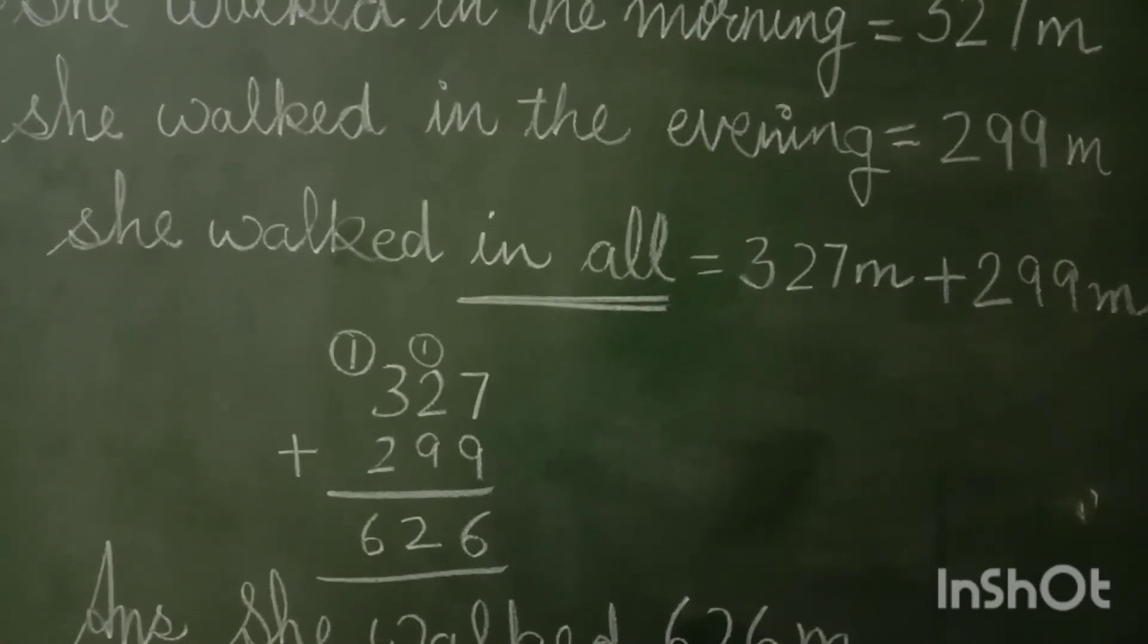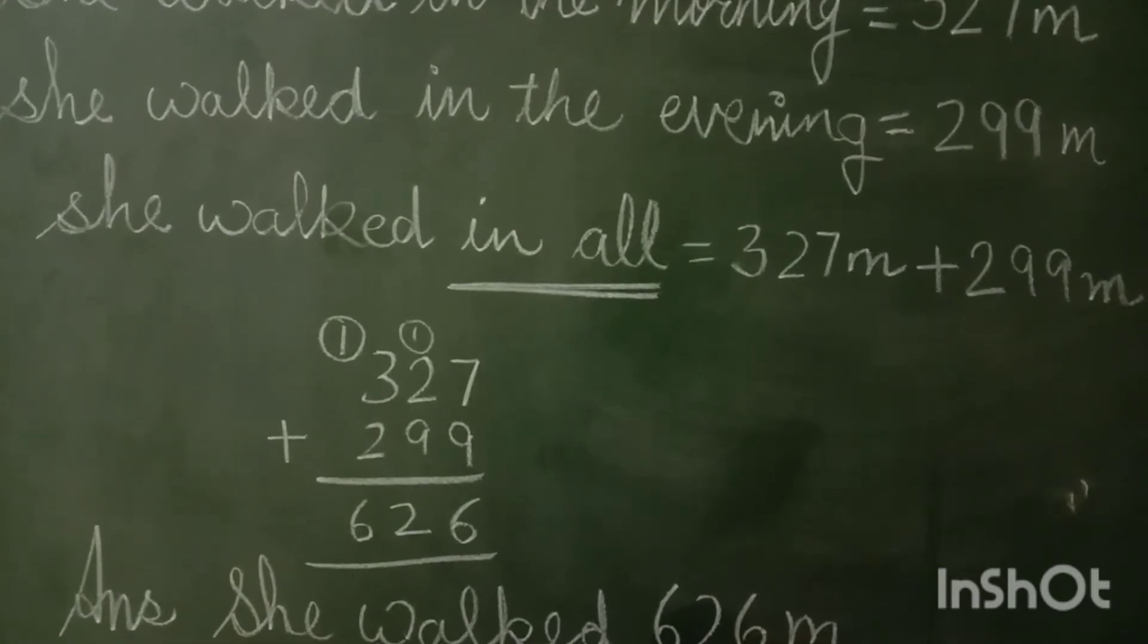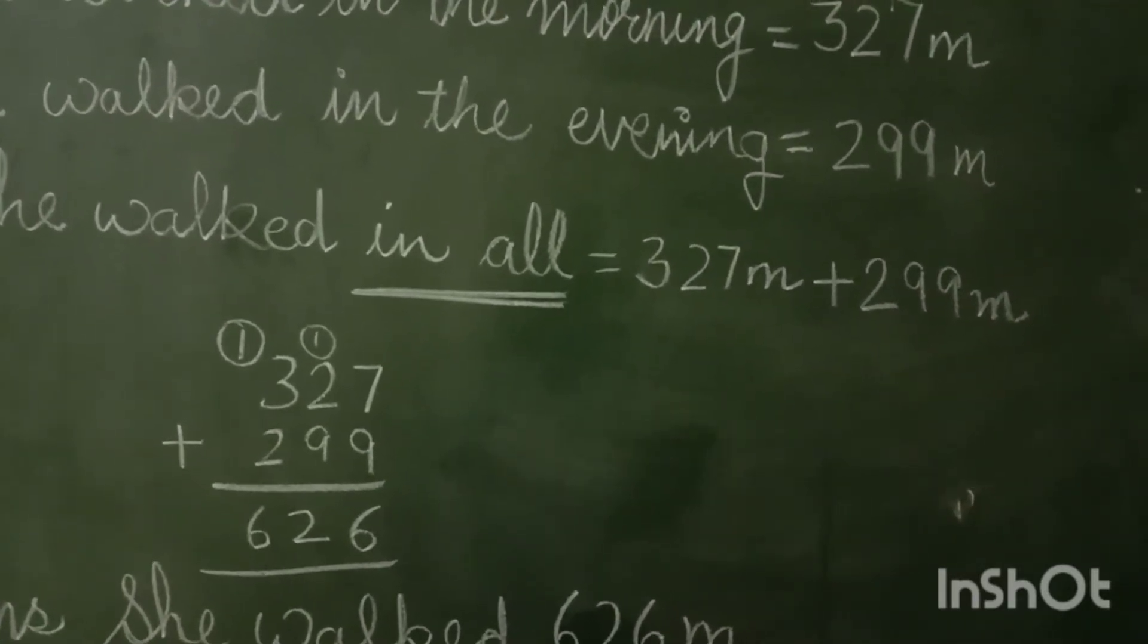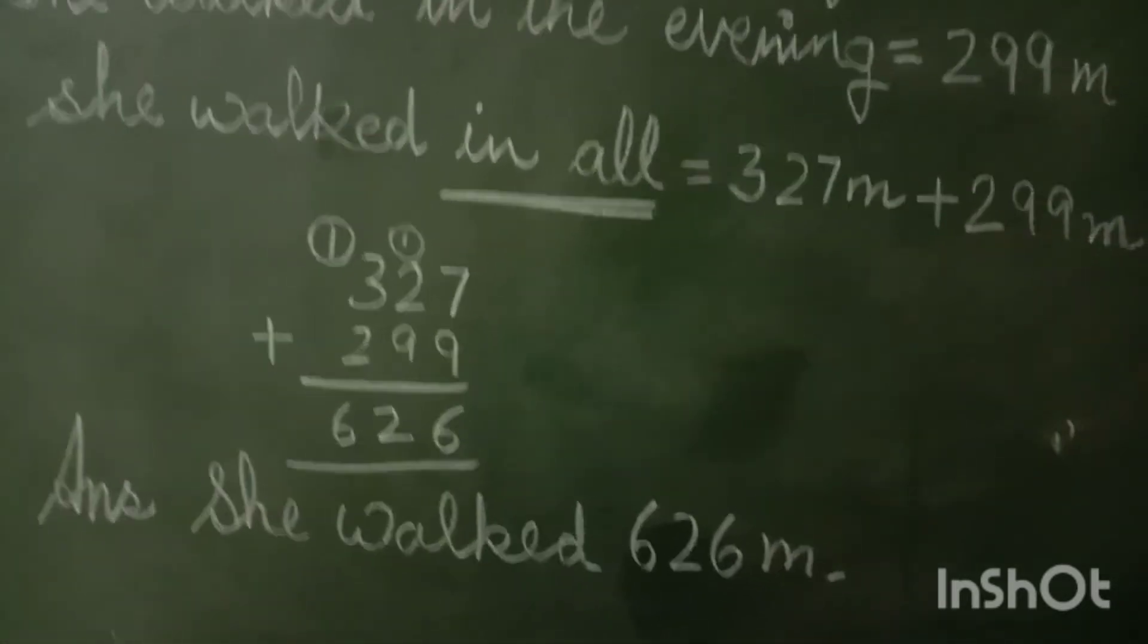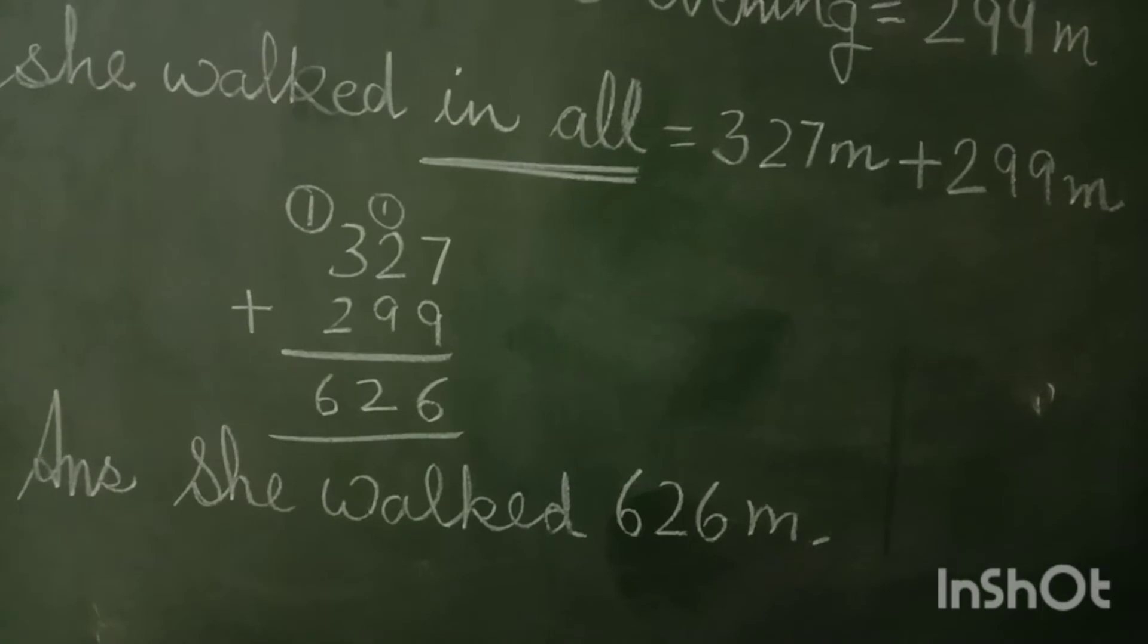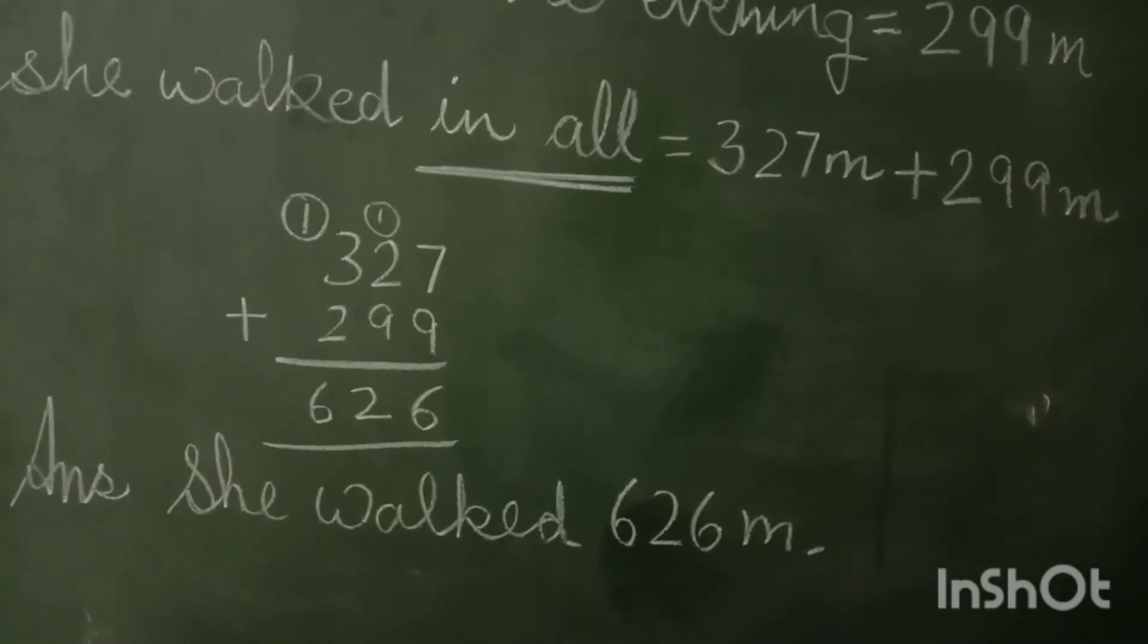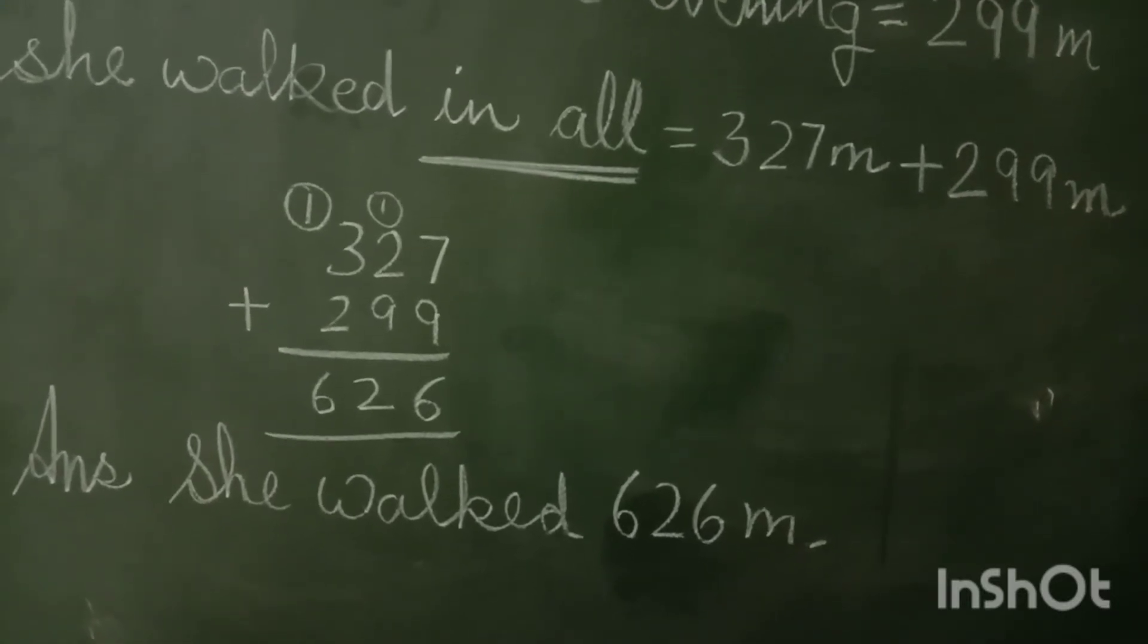I told earlier also, if you see 'in all', just add them. So we have to do addition in this sum: 327 meters plus 299 meters. Addition, you know, carry over sum: 9 plus 7 is 16, one will go as carry over. 9 plus 2 is 11, plus 1 is 12, one will go for carry. 3 plus 2 is 5 and 1 is 6.